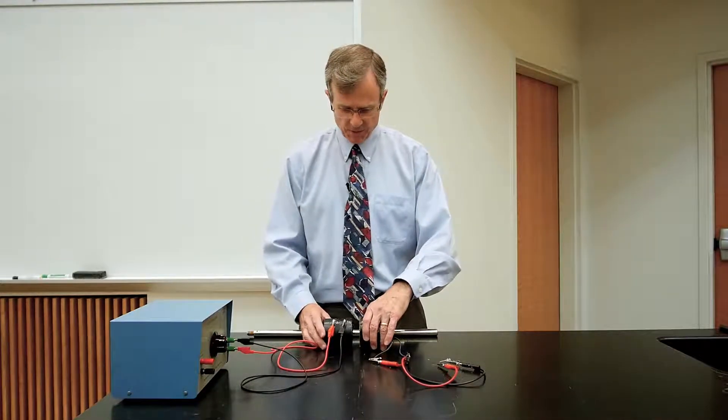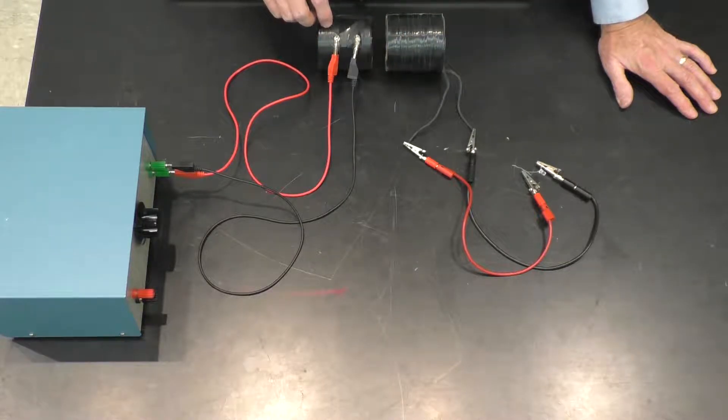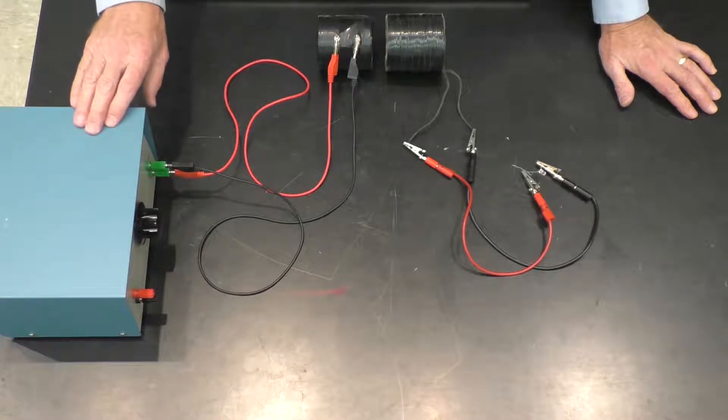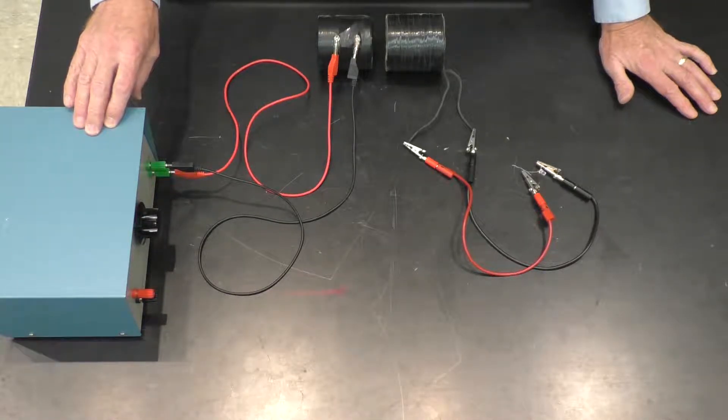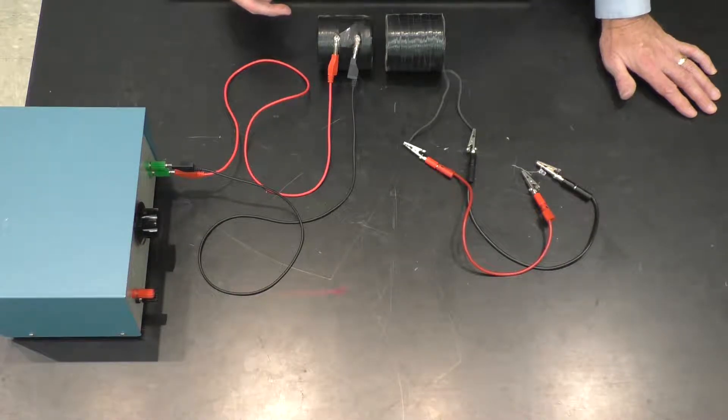We're attaching this coil of wire to a power supply and this is an alternating current. So the current will be going this way, then that way, back and forth 60 times a second.